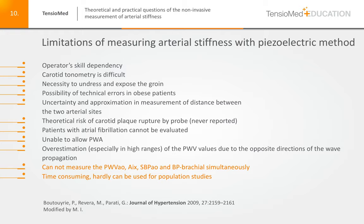Measuring arterial stiffness with the piezoelectric method carries several limitations: the operator needs skill, carotid tonometry is rather difficult, the patient must be undressed, there is possibility of technical errors in obese subjects, uncertainty and approximation in measuring the distance between the two arterial sites, a theoretical risk of carotid plaque rupture by the probe, and patients with atrial fibrillation cannot be evaluated. At that time, this device was unable to measure pulse wave analysis — namely the augmentation index and central blood pressure. This method also overestimated aortic pulse wave velocity, especially in high ranges, because of the opposite direction of wave propagation.